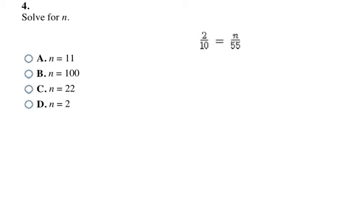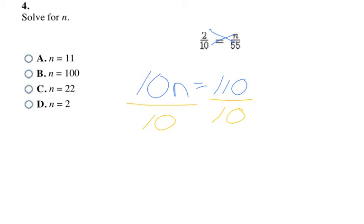Here's another example. I like to cross multiply starting with the term that has the variable: 10 × n = 10n. Then 2 × 55 = 110, so 10n = 110. Divide both sides by the coefficient 10 — the tens cancel — leaving n = 11. A quick trick: when both numbers have zeros, you can cancel them, making this 11 ÷ 1 = 11.